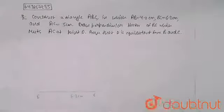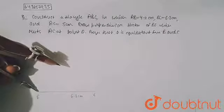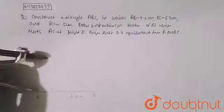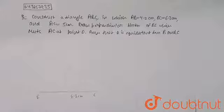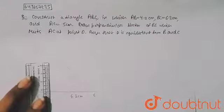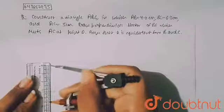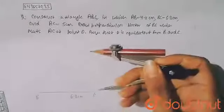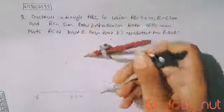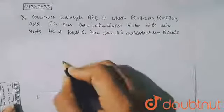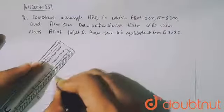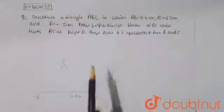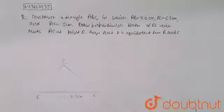By putting the compass at point B, cut an arc. Similarly, AC is given as 5 centimeters, so measure 5 centimeters and by putting at point C, cut an arc. The intersection gives point A. Now join triangle ABC.